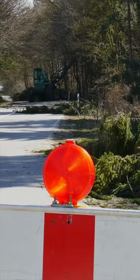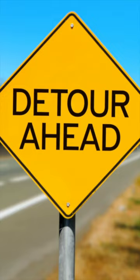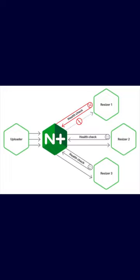Imagine that you are driving a car and you hit a roadblock. Instead of trying to force your way through and risking damaging your car, you take a detour or diversion. Similarly, a circuit breaker is a system that detects when a service is failing or not responding, and instead of continuing to send requests and potentially create more damage, it redirects the request to another available service.